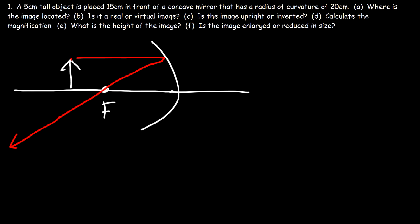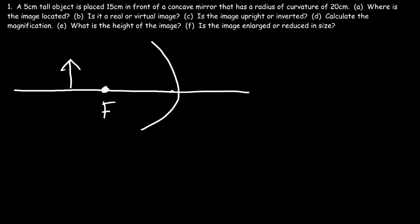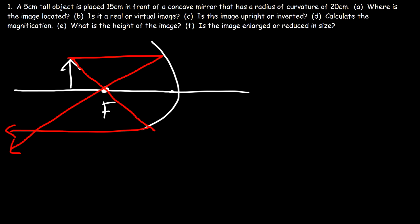We're going to draw a second ray from the object to the focal point towards the mirror, and then it's going to bounce back. This is the location of the image. Notice that we have an image that is inverted, and we have a real image because the light rays actually converge at the image. If they appear to converge with dashed lines, it would be a virtual image. Now the image is not just inverted, but it's also enlarged as well.